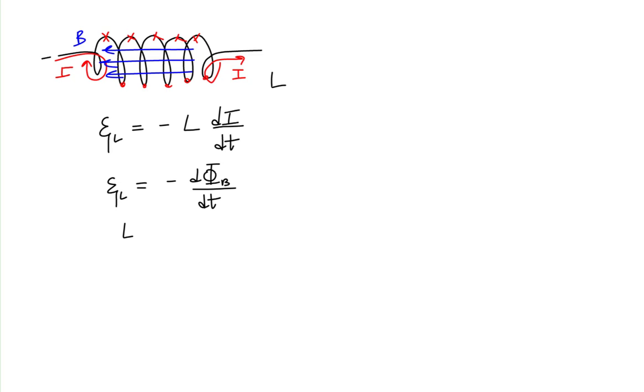Earlier, we defined inductance to be the ratio of magnetic flux over the current through the inductor. This allows us to replace the magnetic flux in our expression for EMF with the product of the inductance of the inductor and the current running through the inductor.